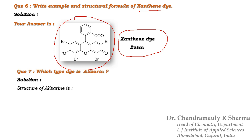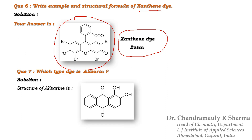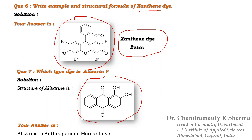Next question: Which type of dye is alizarin? Before going to the answer, we will see the structure of alizarin which is just given on your screen. From this structure you can write the answer. Alizarin is an anthraquinone mordant dye because it contains an anthraquinone group.